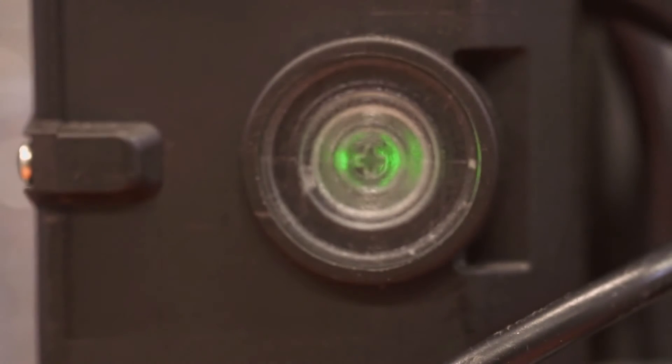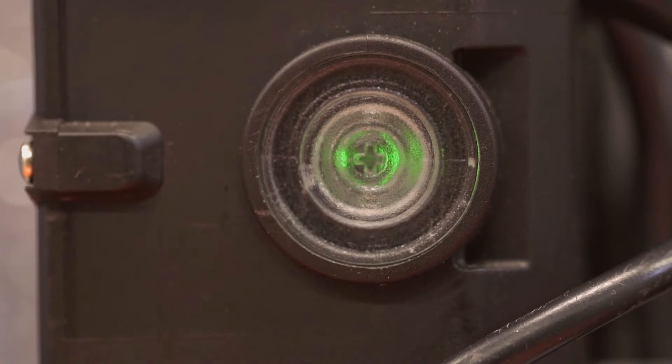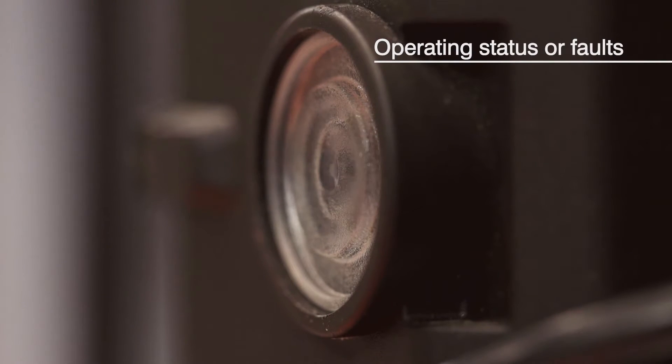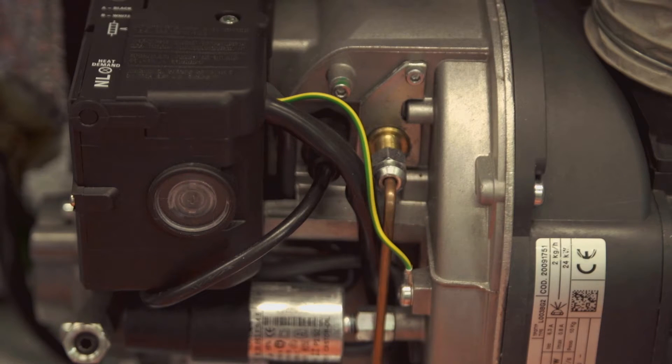When the burner is running, the control box will indicate either the operating status of the burner or any burner faults depending on the color of the reset button. When the burner is running normally, the reset button will be green, and if it locks out, it'll change to red.